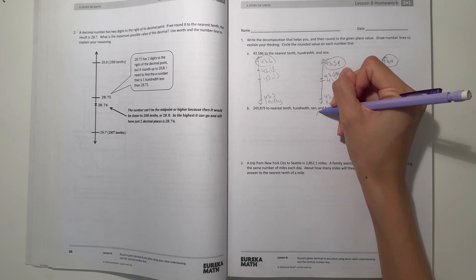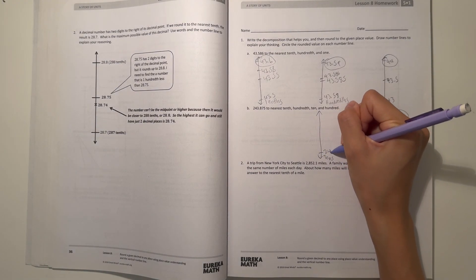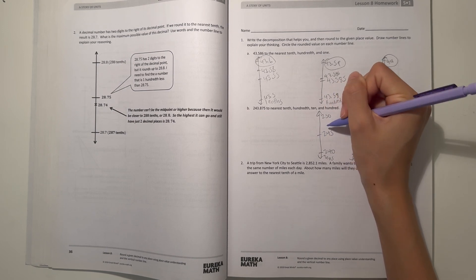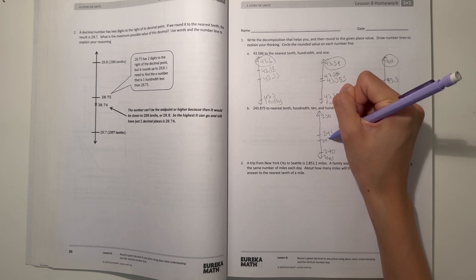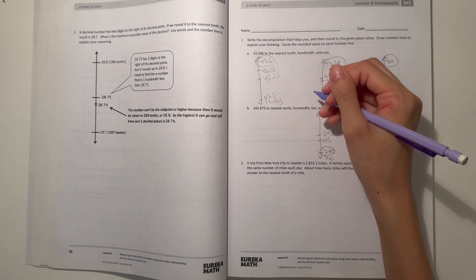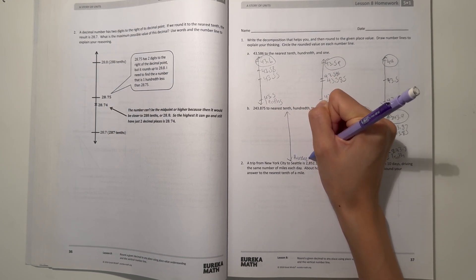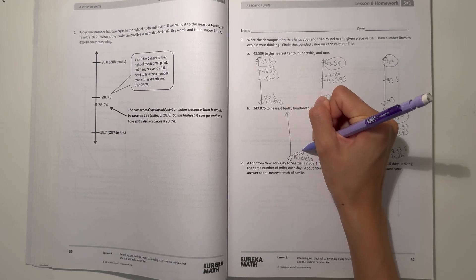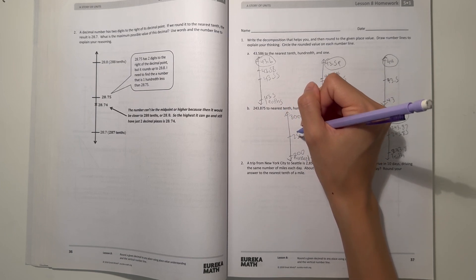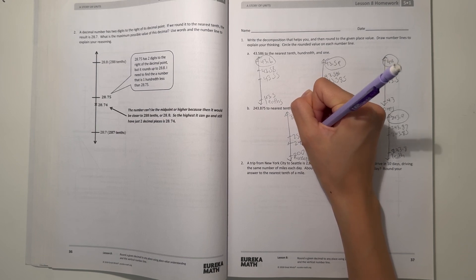Alright, and then for tens place. So this is in between 240 and 250. So we have our 243, that would be right here. So we round down to 240. And for hundreds. So 243 is in between 200 and 300, and our midpoint would be 250. 243 is like right here. So we round down to 200.